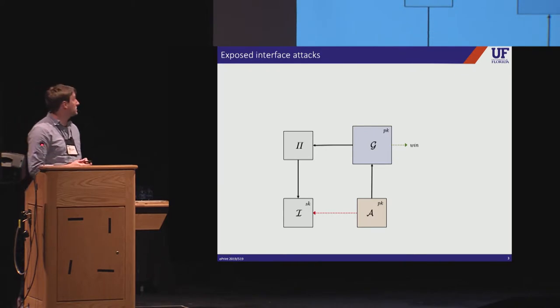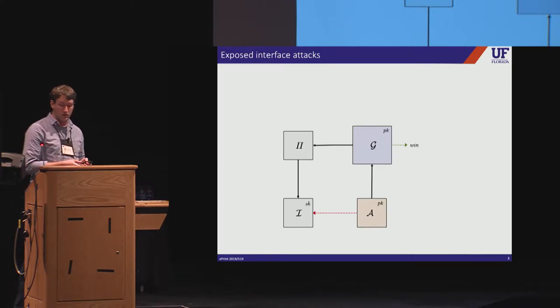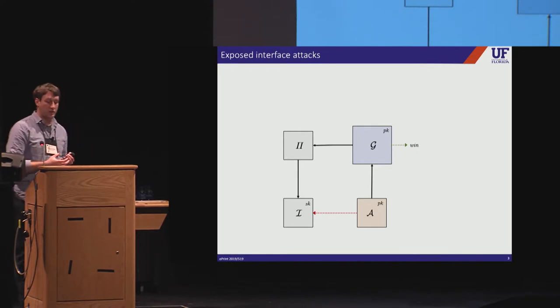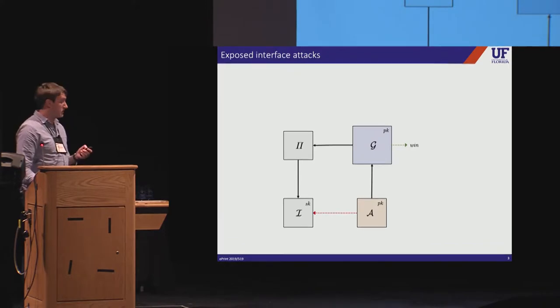Okay, so suppose that pi is defined in terms of calls to some underlying object that defines a set of key operations that can be performed. So we'll call this object the interface, and it's going to define what the set of key operations that can be performed in an experiment. So in an exposed interface attack, the adversary is given access to this interface and may use it in its attack against the game. So this models key reuse attacks at various levels of abstraction.